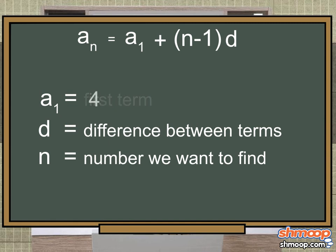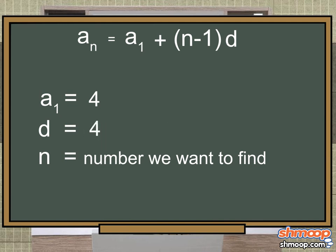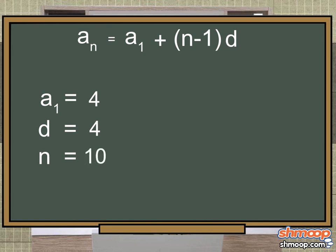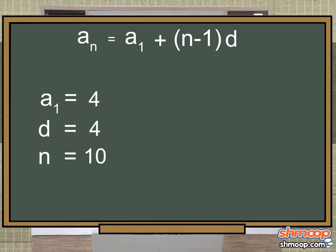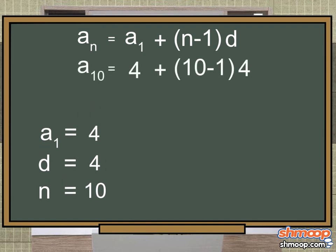Here we know that a sub 1 is 4, since Irving lost four hairs on day one. We know that d is also 4, because there are four more hairs lost each day than the day before. We also know that n is 10, because we want to find the tenth term in the sequence. Plugging in our known variables, we get: a sub 10 equals 4 plus 10 minus 1 times 4.